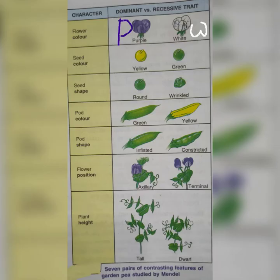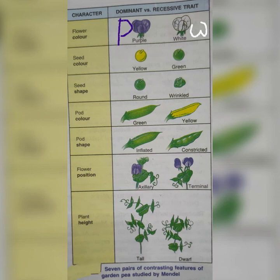With the help of a diagram, Mendel studied 7 pairs of contrasting features of Garden Pea. The first character is flower colour — purple is the dominant trait and white is the recessive trait. Dominant characters are shown with capital letters and recessive traits with small letters. Then there is seed colour — yellow is dominant and green is recessive. Seed shape — round is dominant and wrinkled is recessive. Pod colour — green is dominant and yellow is recessive.